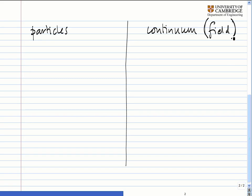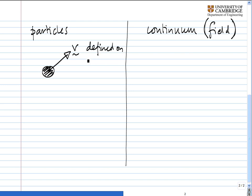There's an important distinction to be made between treating things as particles and treating things as continuum fields. Let's start with the particles. If you have a particle and it has a certain velocity, for example, this is defined on the particle.